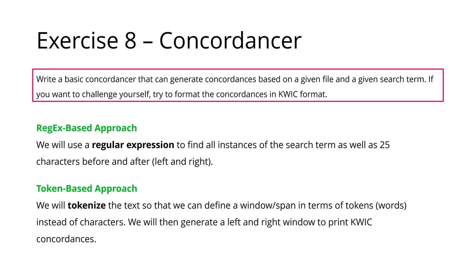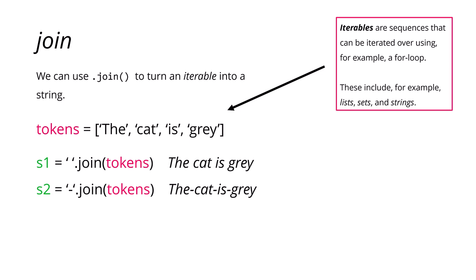Now we're going to look at the second solution: the token-based approach. To do so, we need to introduce two more concepts. The first is the join statement: with join, we can turn an iterable into a string. For example, given a list of tokens ['The', 'cat', 'is', 'gray'], we can do ' '.join(tokens) to get 'The cat is gray', or '-'.join(tokens) for 'The-cat-is-gray'. Basically, you take all elements of an iterable and join them together using a character you've defined.